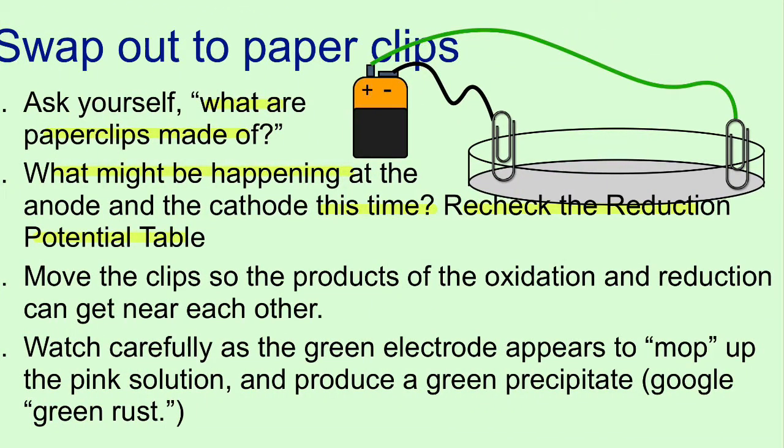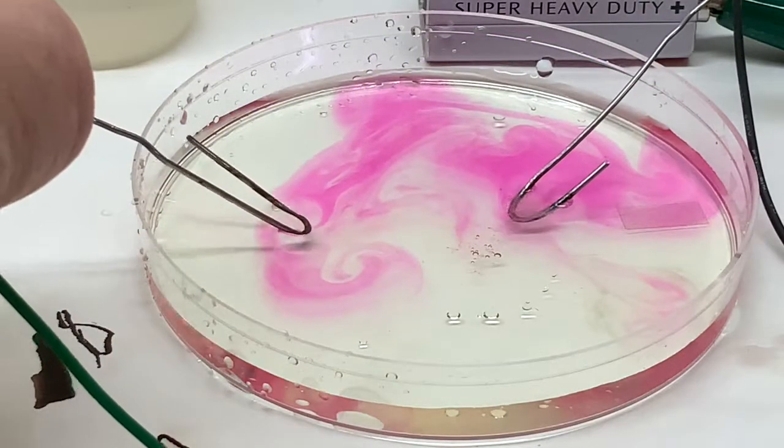Now we'll proceed to the last section of the lab and swap out the nichrome electrodes for paper clips. Ask yourself, what are paper clips made of? Make some careful observations.